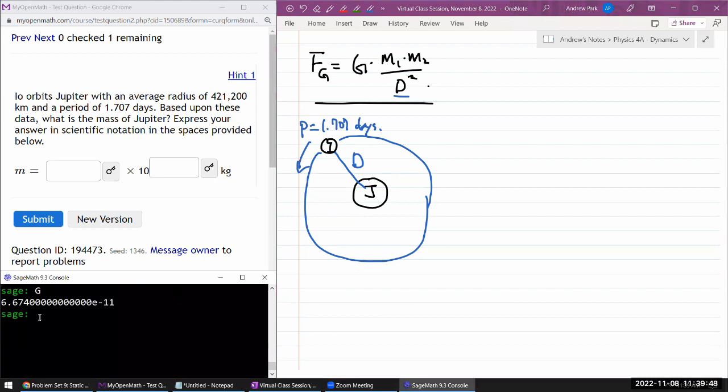It looks like it should be able to work it out. So let's give it a try. So I still have G programmed into SageMath, so I'm going to be using that. So I need an expression that involves the mass of Jupiter and will somehow involve the period. So I can see that mass of Jupiter will somehow come in, in the Newton's law of universal gravitation expression.